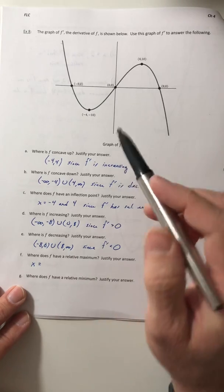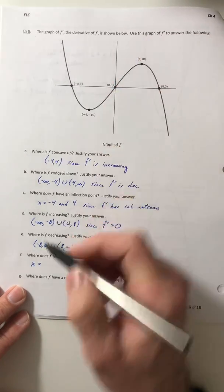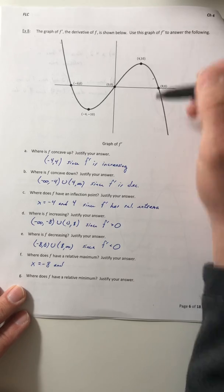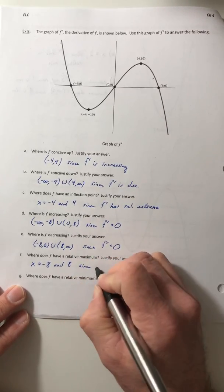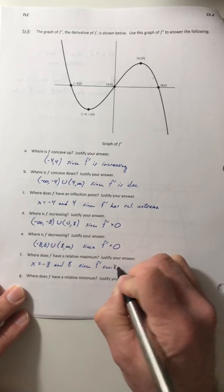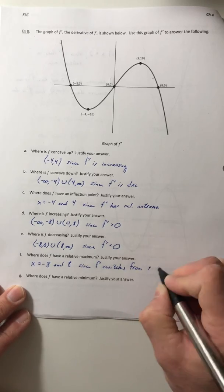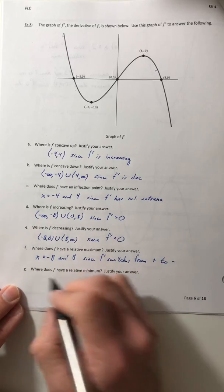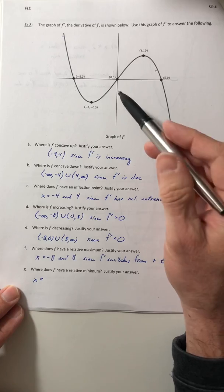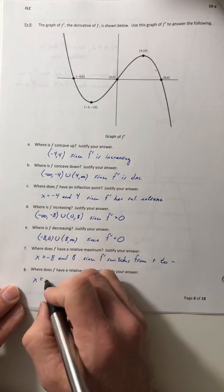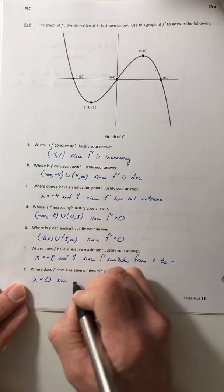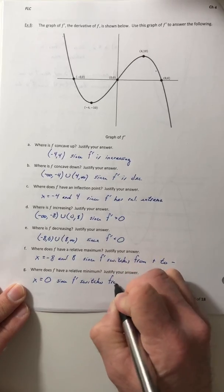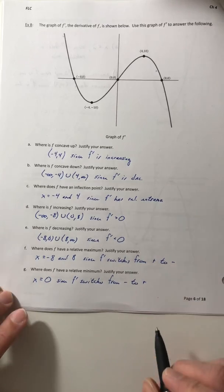Where does F have a relative max? Where the derivative switches from positive to negative — above to below — so right at negative 8 and right at positive 8, since the derivative switches from positive to negative. Where does F have a relative min? Where it switches from negative to positive, or from below to above: x equals 0, since the derivative switches from negative to positive.